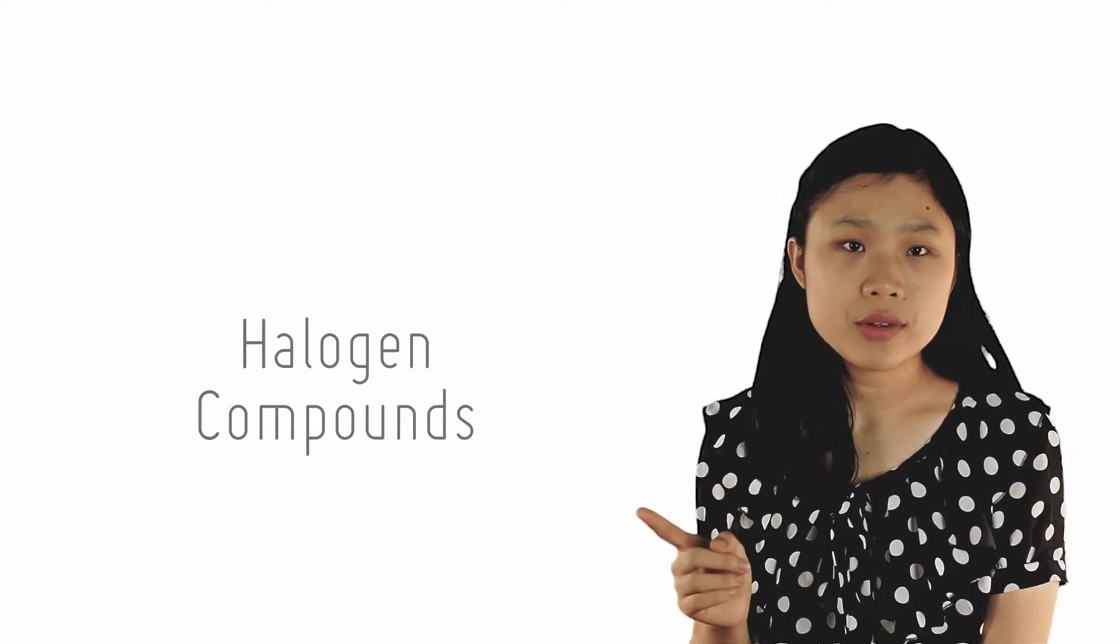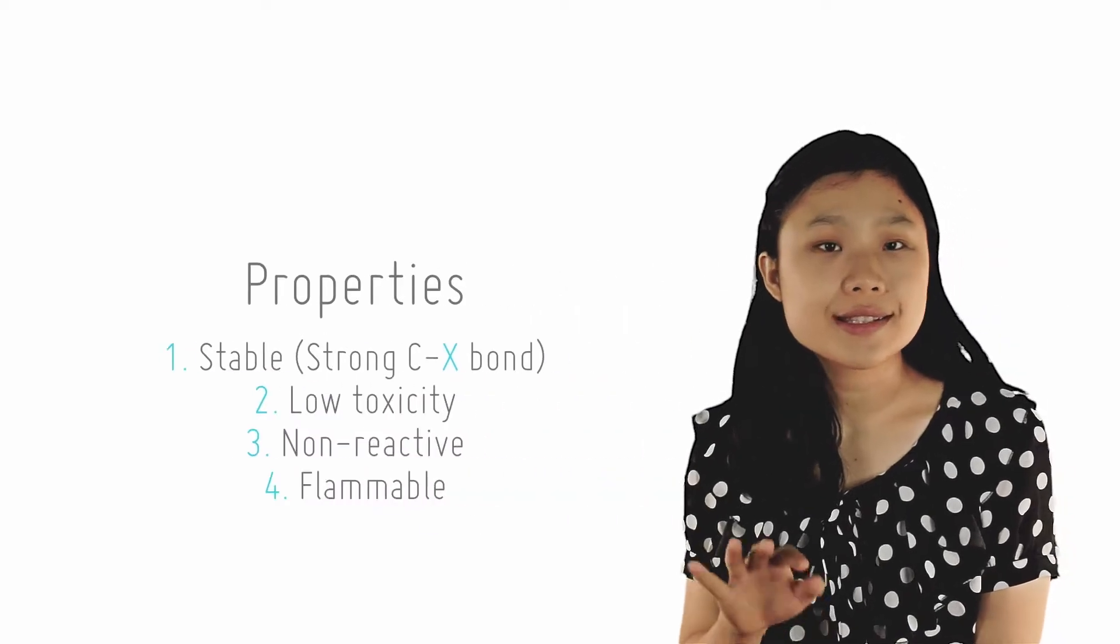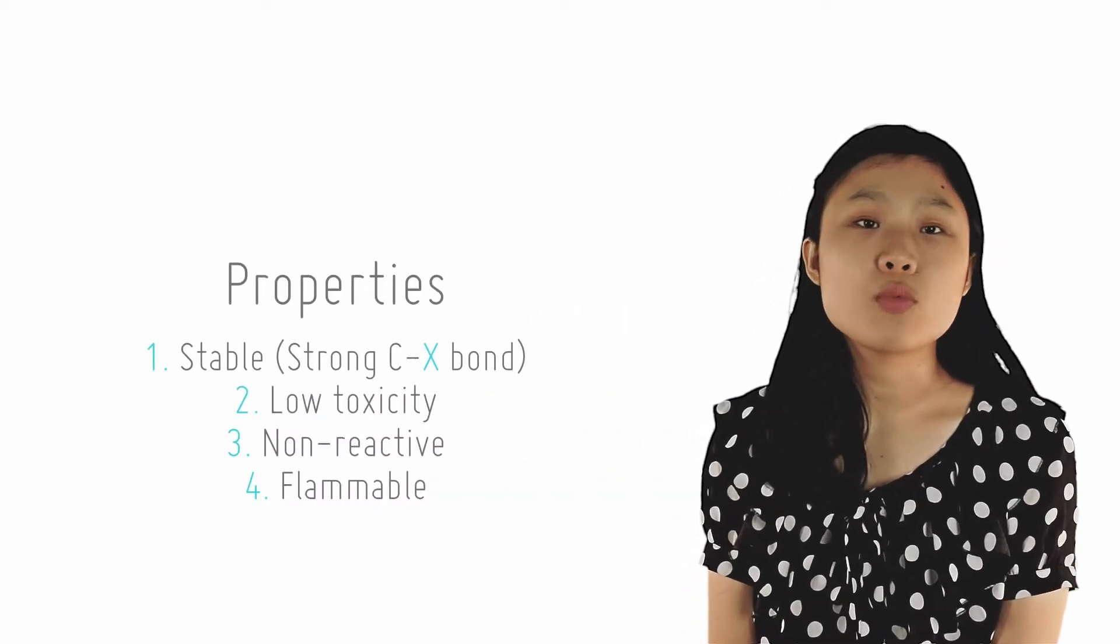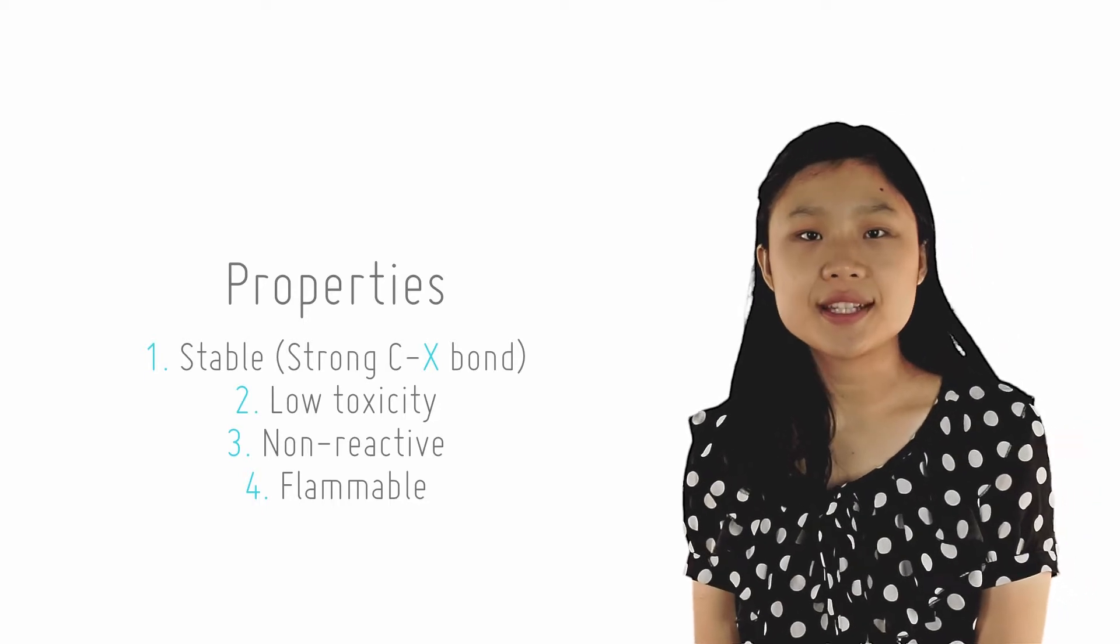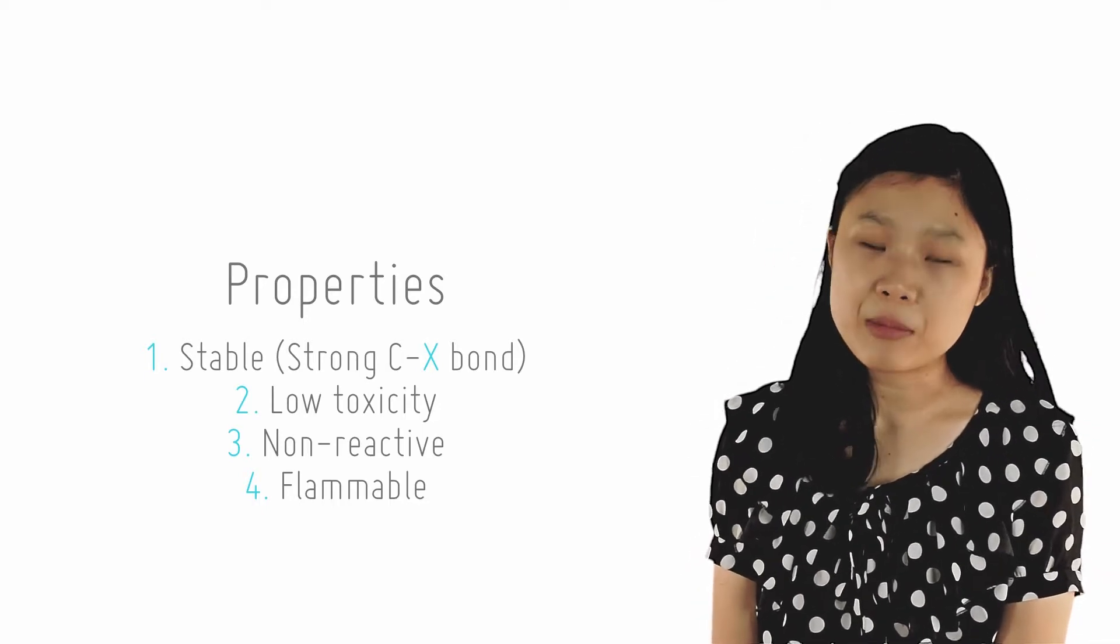Due to the strength of the CX bond, the halogen compounds can be very stable, and thus can be used in a wide variety of ways. Halogen compounds are low in toxicity, not very reactive and flammable.